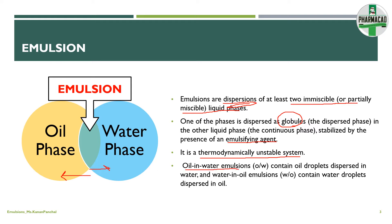There are two types of emulsion. In an oil-in-water emulsion, the dispersed phase is oil — oil globules or oil droplets are dispersed in the continuous phase, water. The other is water-in-oil emulsion, where the water phase or water droplets are dispersed in the oil phase. Oil-in-water is represented as O/W and water-in-oil is represented as W/O.